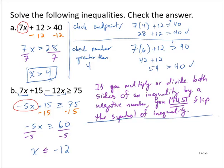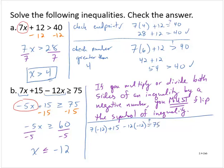Now let's check our answer. First, let's check equality with negative 12. Is 7 times negative 12 plus 15 minus 12 times negative 12 equal to 75? Let's check: negative 84 plus 15 is negative 69, and negative 69 plus 144 is 75. So that checks out.